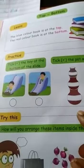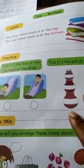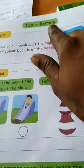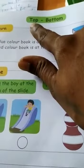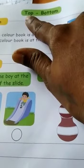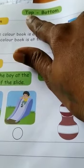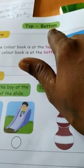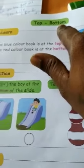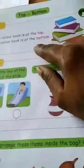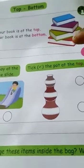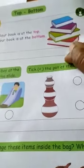Hi Kutis, happy morning to all. Already yesterday I thought top and bottom. What is the top? Top means something which is kept above. What is the bottom? Bottom means something which is kept below. Today we will learn which is the top book and which book is the bottom.